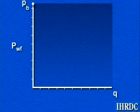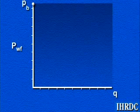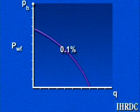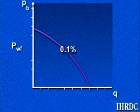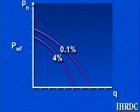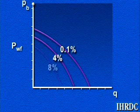As depletion occurs in a solution gas drive reservoir, the productivity of a typical well decreases. This occurs primarily because the reservoir pressure is reduced and because increasing gas saturation causes greater resistance to oil flow.